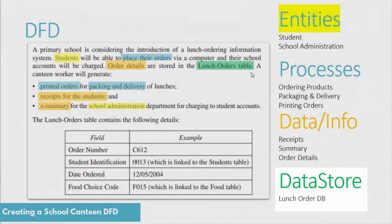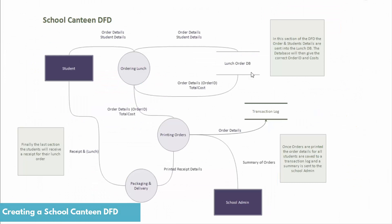Once we have all of our entities, processes, data and information, and databases, we can draw it all up. Here is an example of a school canteen DFD. The student starts off by putting in their order details and student details into the ordering lunch process. Those details then go into the database, where a total cost is calculated. Once the order is in the database, you can retrieve specific information using an order ID, and that's what comes out of the database.